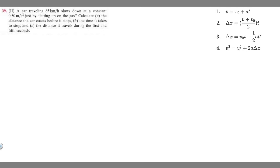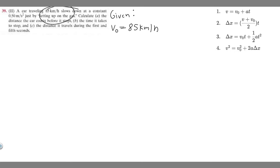Let's start by writing out what we're given. The car is traveling 85 kilometers per hour before it slows down, so the initial velocity V₀ is 85 km/h. It's slowing down at a constant 0.5 meters per second squared, so acceleration is minus 0.5 m/s² — negative because we're slowing down.